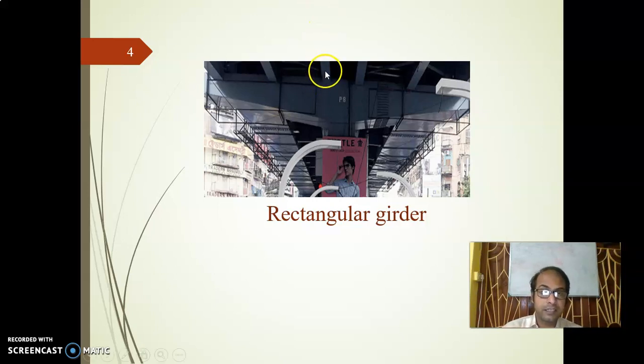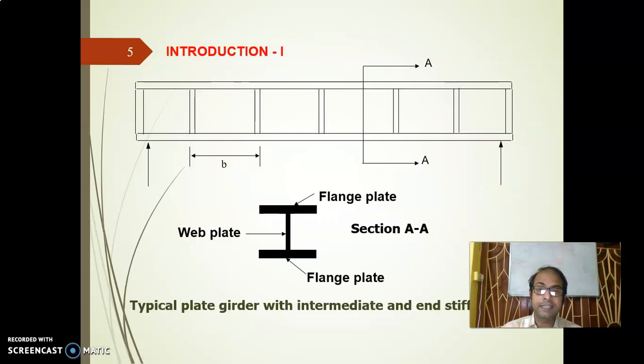How it looks: if you see, the plate girder is a simple beam which is formed by three plates - flange plates and web plates. So we have three components in plate girders, actually.